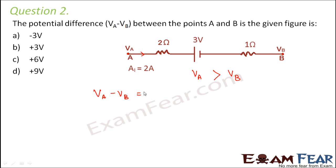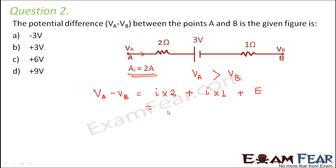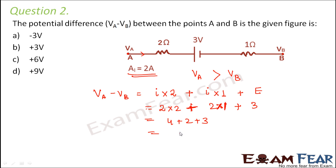The potential difference Va minus Vb is determined by the voltage drops across the resistances plus the EMF of the cell. Voltage drop across the 2-ohm resistor: 2A × 2Ω = 4V. Voltage drop across the 1-ohm resistor: 2A × 1Ω = 2V. The cell EMF is 3 volts. So Va − Vb = 4 + 2 + 3 = 9 volts.